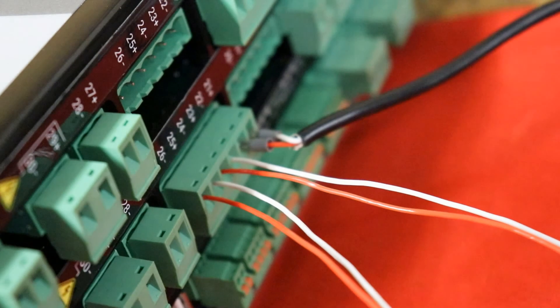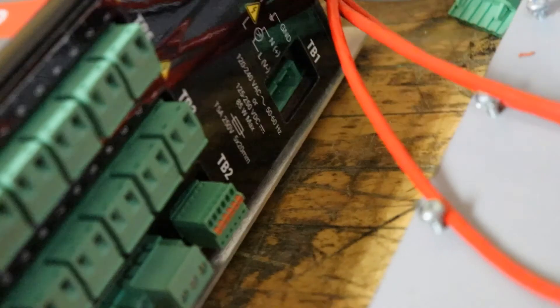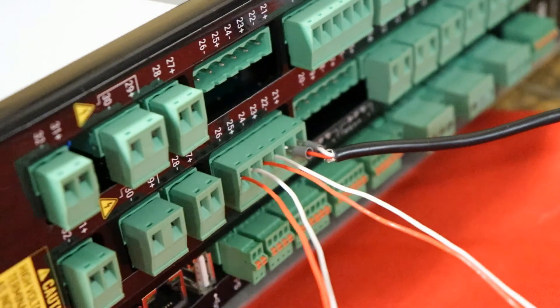The CTs are then connected to terminals 21 through 26 on TB3 as shown here. The polarity is marked for correct connection the first time.